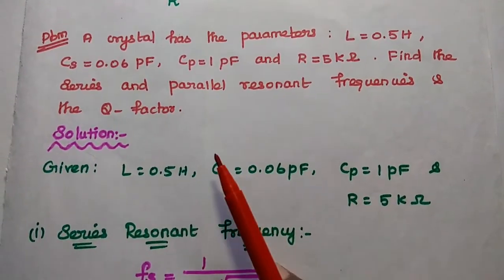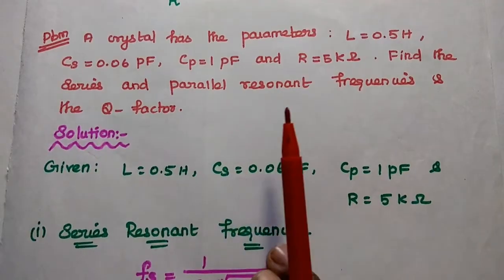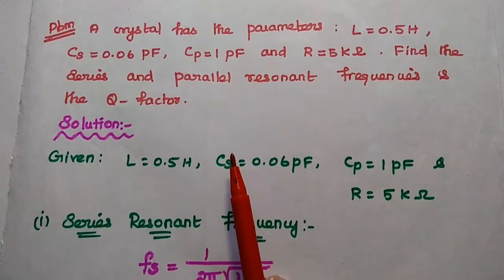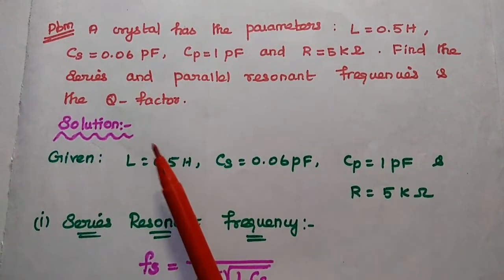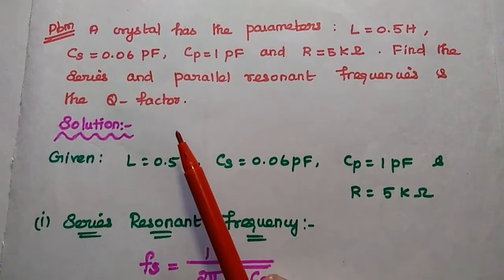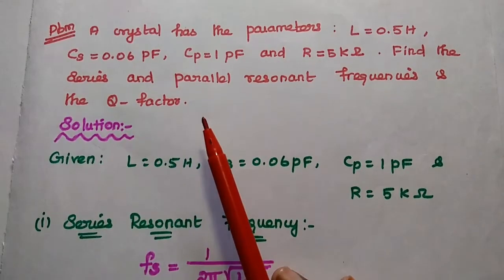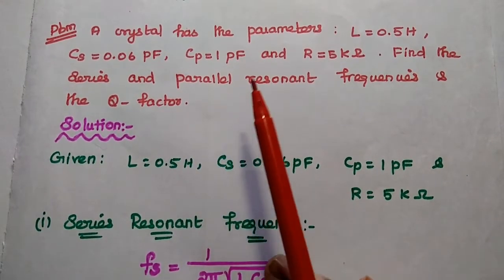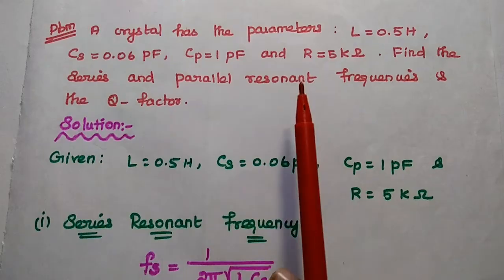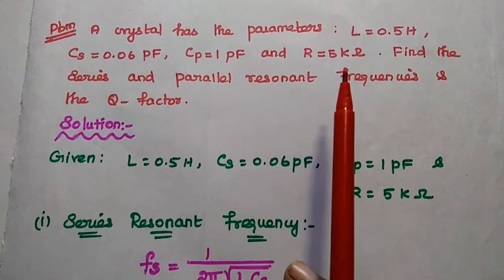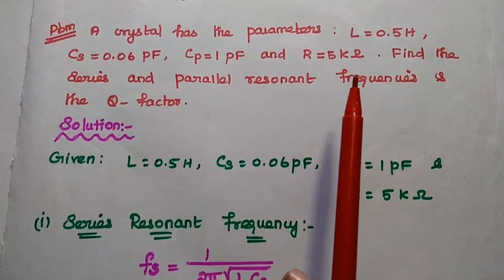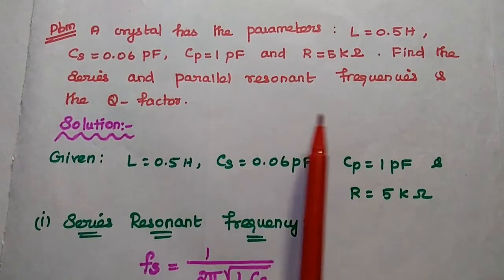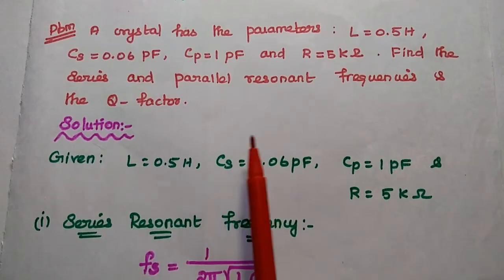The problem is: a crystal has the parameters L = 0.5 Henry, Cs = 0.06 picofarad, parallel capacitance Cp = 1 picofarad, and R = 5 kilo-ohm. Find the series and parallel resonant frequencies and the Q factor.